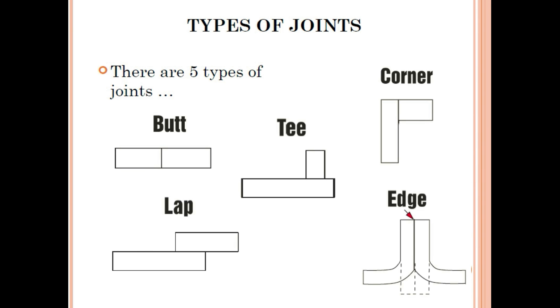There are five types of joints in SMAW welding: butt, lap, tee, edge, and corner. Each joint type — butt welding, tee welding, corner welding, edge welding, and lap welding — has its own configuration and preparation requirements.